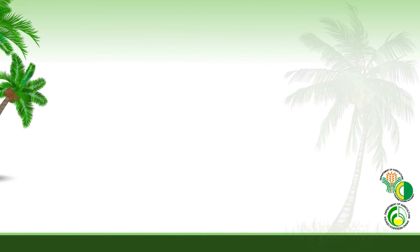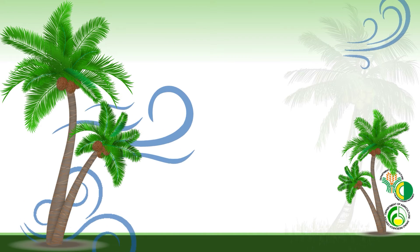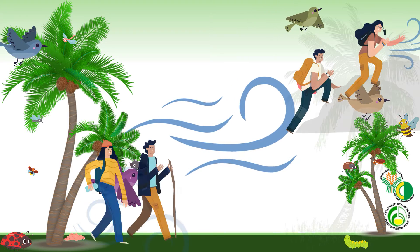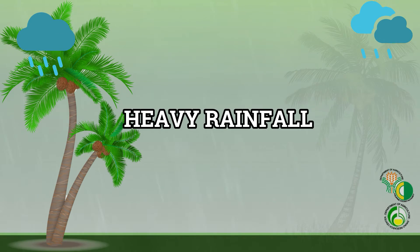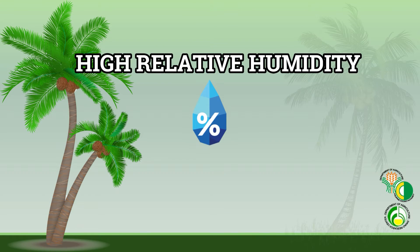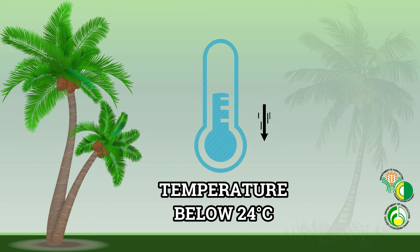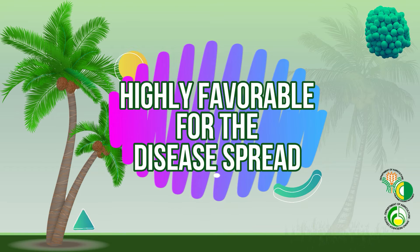Dissemination of the disease is primarily by wind, and to a lesser extent by insects, birds, and climbers. Heavy rainfall, high relative humidity of 94 to 100 percent, and temperatures below 24 degrees Celsius are highly favorable for disease spread.